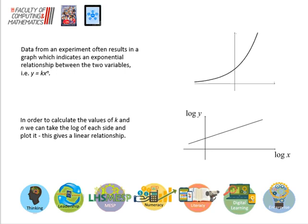Data from an experiment doesn't always come out in a straight line. It doesn't always come out in a nice relationship like a straight line, a parabola, or a cubic. But a lot of the time, particularly when we talk about examples like the decay of bacteria or population growth, it comes out with an exponential relationship. Now, an exponential relationship makes it very difficult to extract values — what the multiplier is, what the power is.